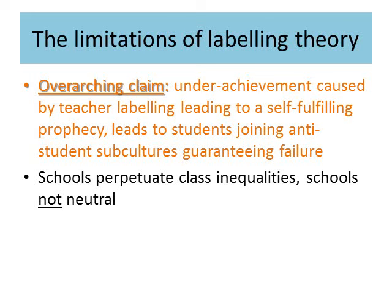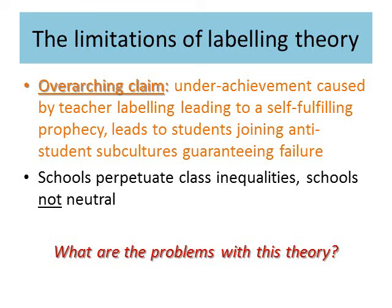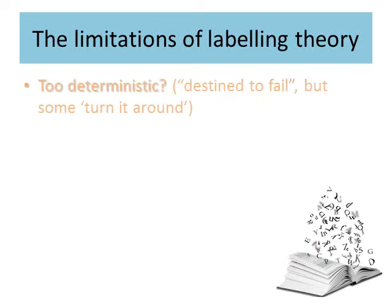Arguably, this theory is too deterministic — it seems to state that students' destinies are written the moment they arrive in school and are labelled by teachers, and that they cannot change or overcome that. In reality, we know that is not always the case. No one is necessarily destined to fail; some students turn it around, starting off poorly but working much harder towards the end and achieving good grades. And the opposite is also true — some students who do well at first get turned off later on and then fail.